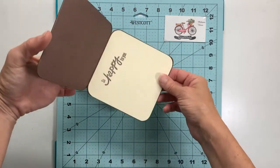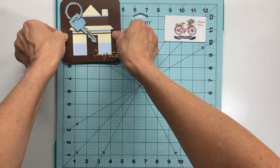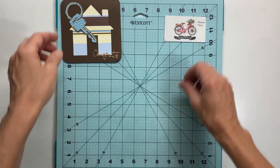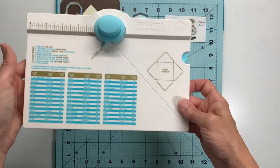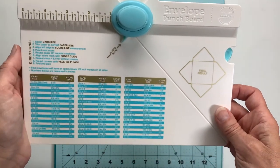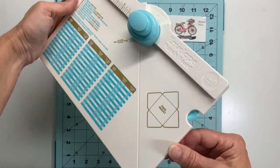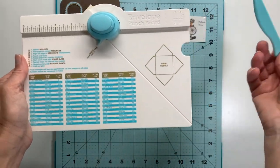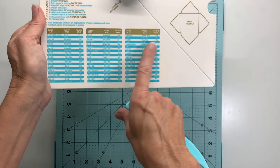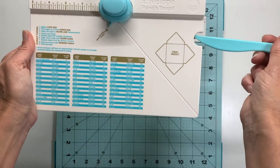Again this is a five by five inch card. I will bring over my envelope punch board and here you have an overview of what that looks like. It includes its own bone folder stored handily in the side there as well as all the directions and card sizes.